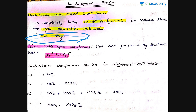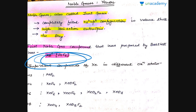But this was challenged by Bartlett for the first time. He was performing experiments with platinum fluoride using O₂⁺, and he found that the ionization energies and electron gain enthalpies of O₂⁺ and xenon are comparable — with only a minor difference of 3 to 4 kilojoules per mole. So when he substituted O₂⁺ with xenon, he obtained beautiful red crystals of a compound: Xe⁺[PtF₆]⁻, that is xenon hexafluoroplatinate.